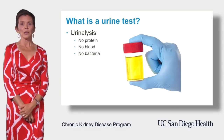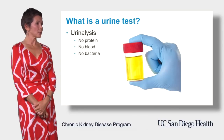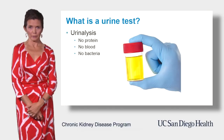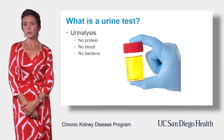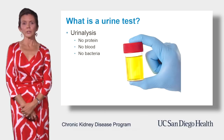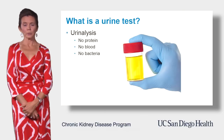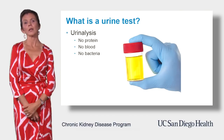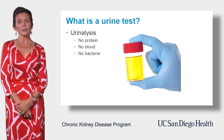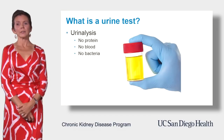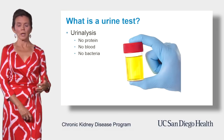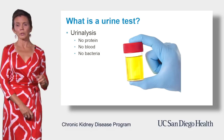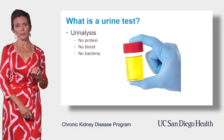We are now done going over various blood tests and are ready to focus on testing of the urine. In the normal state of kidney health, there should be no blood, no protein, and no bacteria in the urine. Presence of blood or protein cannot be detected with the naked eye, that's why we ask you to submit a urine sample to the lab for more precise microscopic measurements.